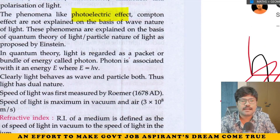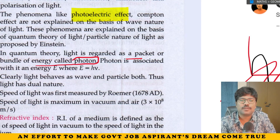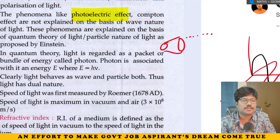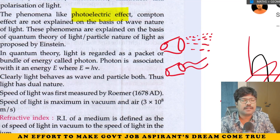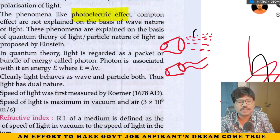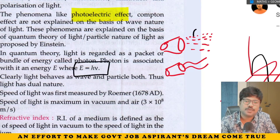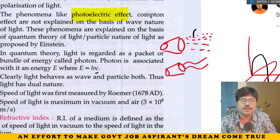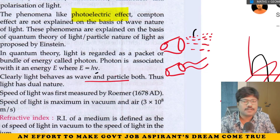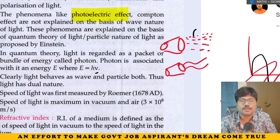In quantum theory, light is regarded as a packet or bundle of energy called a photon. Each photon has some energy. How much energy? E is equal to h times nu — where h is Planck's constant and nu is the frequency. E = hν. Clearly, light behaves as both a particle and a wave — light has a dual nature.